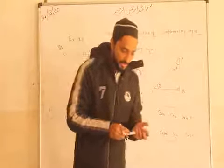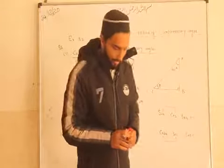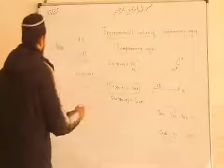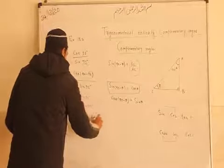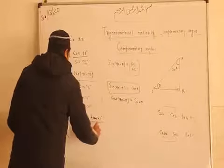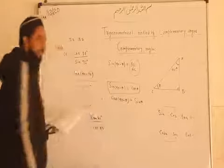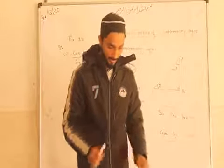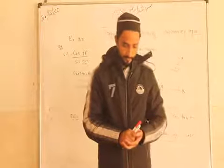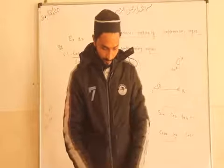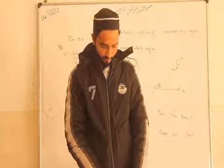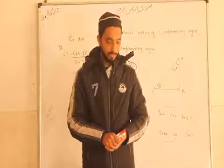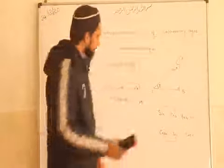Similarly, the second part is also there. It is not directly complementary but we will try to change it. This is tan 41 and cos 49. So, you can do this also by the same logic. Then, third part — first you do the second part, then I will tell you the third one. There is one more concept in that.